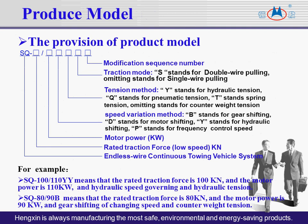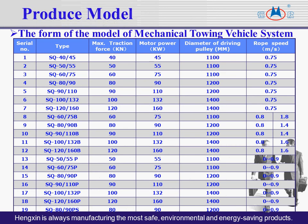There is a unified international standard for the endless wire continuous towing vehicle system models. Each letter or number in the model has specific meanings. This shows the form of the model for a mechanical towing vehicle system.